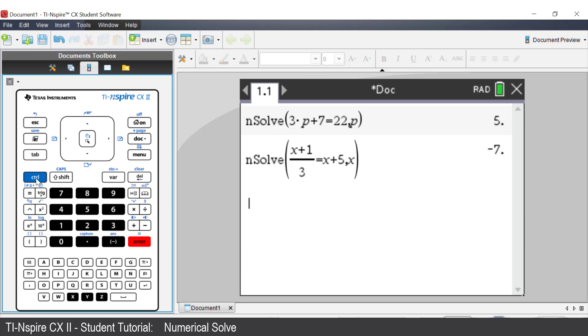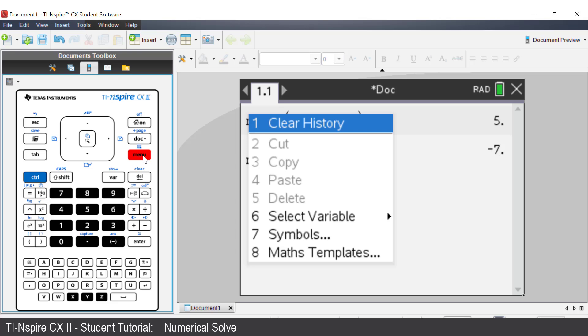Another method is to use the right click on the calculator. The right click on the calculator is Control Menu. Press Control, then press Menu. You will see the pop-up window with options available. Press the Escape key to close this window.